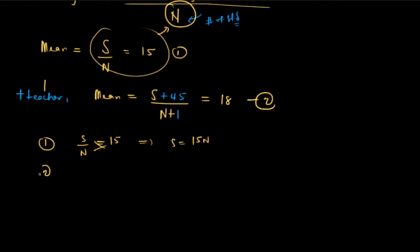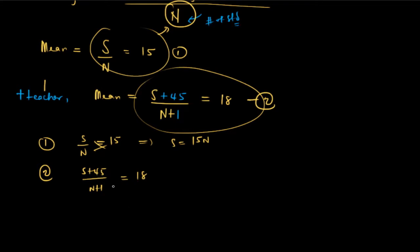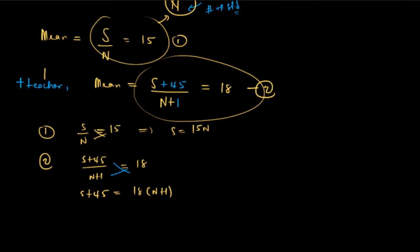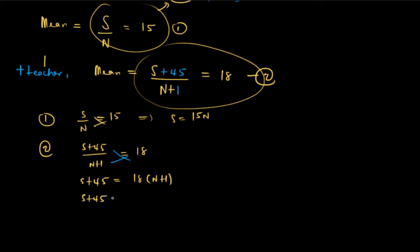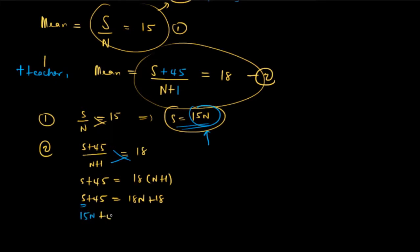For equation two: s plus 45, divided by n plus 1, equals 18. Cross multiplying gives s plus 45 equals 18 times (n plus 1), which expands to 18n plus 18. From equation one we have s equals 15n, so substituting: 15n plus 45 equals 18n plus 18.